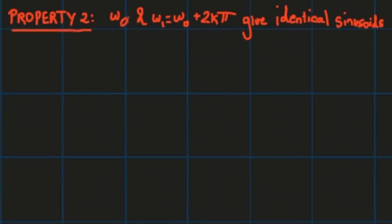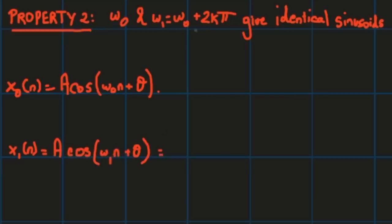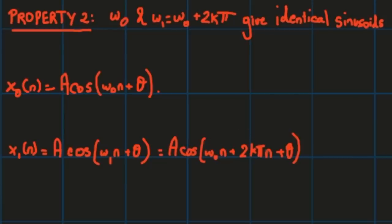Property 2 states that if two discrete time sinusoidal signals have angular frequencies where one is the other plus 2kπ, then both sinusoids are actually identical. To see this: x0[n] = a·cos(ω0·n + θ) and x1[n] = a·cos(ω1·n + θ) with ω1 = ω0 + 2kπ. Substituting gives a·cos(ω0·n + 2kπn + θ). Since cosine is 2π-periodic, this equals a·cos(ω0·n + θ) = x0[n].